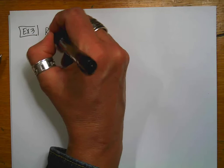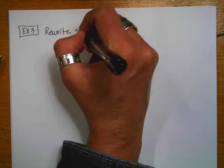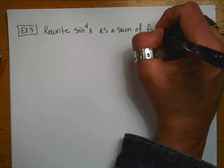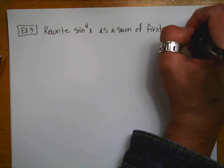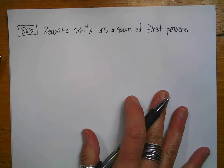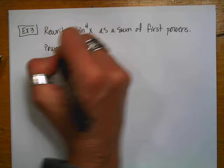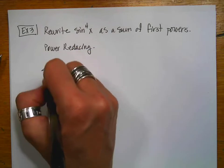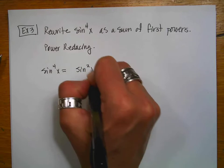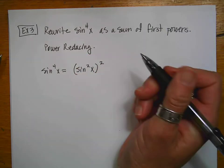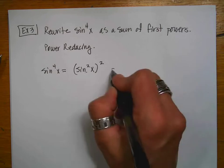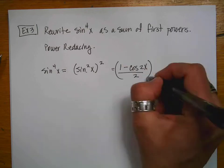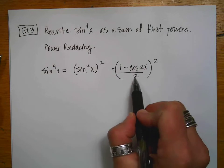For example number 3, we're going to rewrite sin⁴(x) as a sum of first powers using our power reducing formulas. I can write sin⁴(x) as (sin²(x))². The power reducing formula for sin²(x) is (1 − cos(2x)) / 2. So I'll substitute that in and square it.